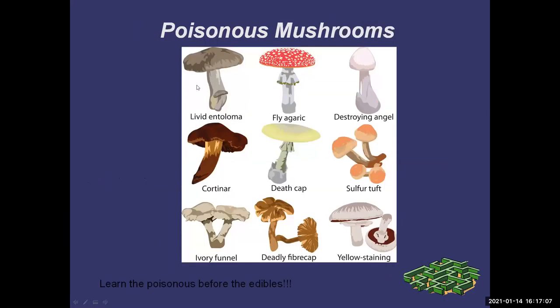Now, poisonous mushrooms. There aren't really that many that will kill you dead, so it's important to just learn the kill-you-dead ones — the amanitas, some funnel caps, fiber caps, and Cortinarius, and of course Galerina, which are very, very poisonous. If you eat them, you'll either go into kidney failure or liver failure, and the chance of surviving that is really low.